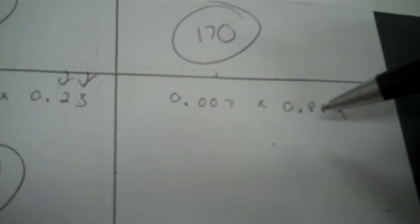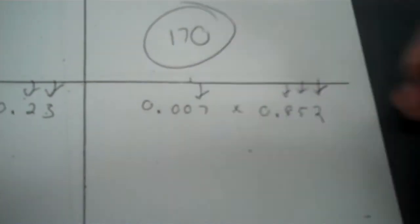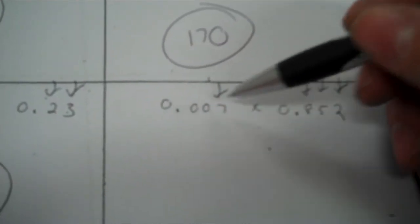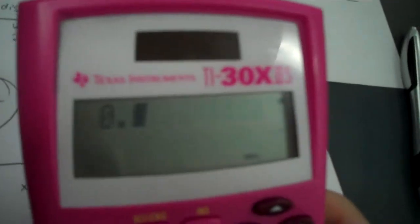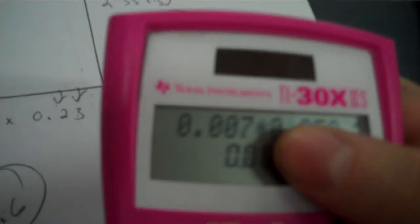How many sig figs here? Let's mark out the non-zero — those count. Zeros between non-zero digits are significant — these are not between anything. Zeros after a decimal are significant — these are after the decimal. The other zeros aren't. Final zeros before a decimal are not significant. So basically they each have three, so we're going to go with three sig figs. So 0.007 times 0.852 — once again you're going three.